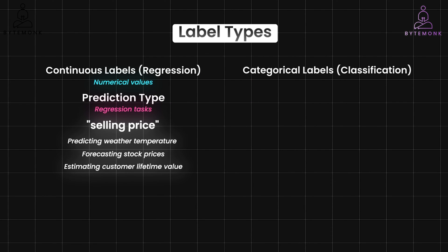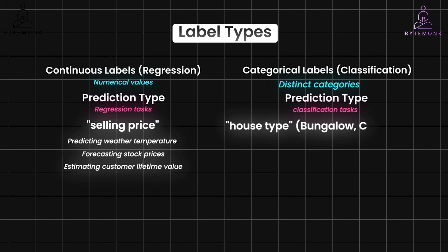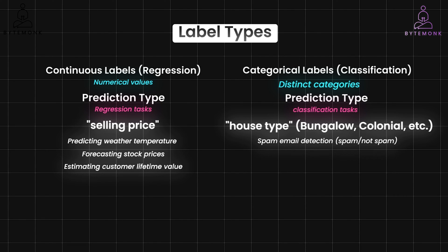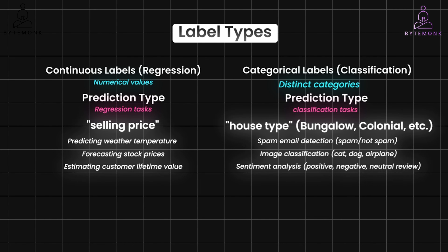Categorical labels, or classification, represent distinct categories or options with a clear separation between each category. Models trained with categorical labels are used for classification tasks — they predict the class a new data point belongs to. For example, if the label in our real estate case were house type such as bungalow or colonial, the model would predict which category a new house falls into. Other examples include spam email detection, image classification such as cat, dog, or airplane, and sentiment analysis such as positive, negative, or neutral.